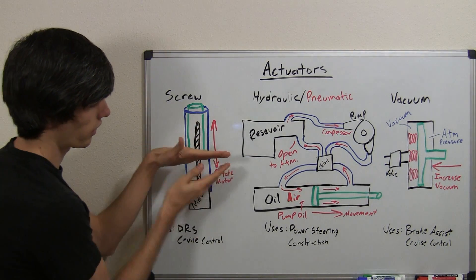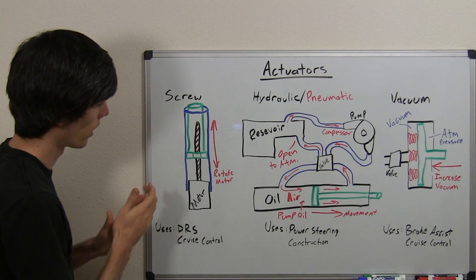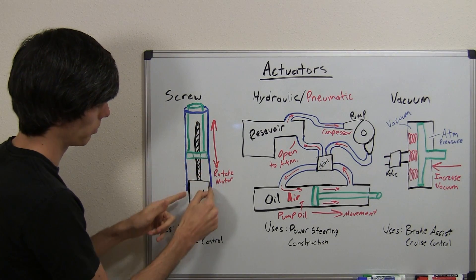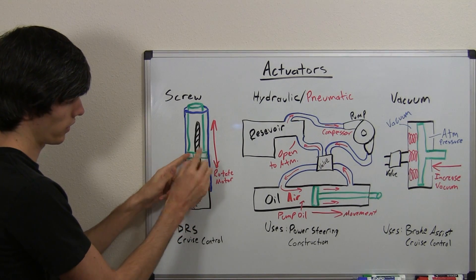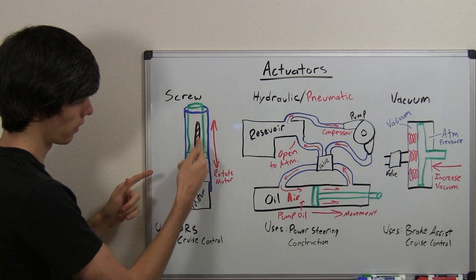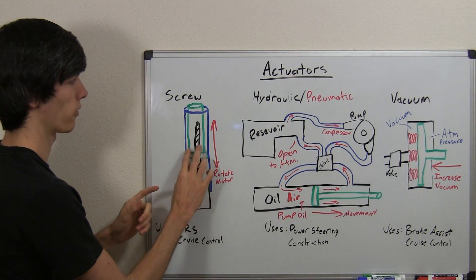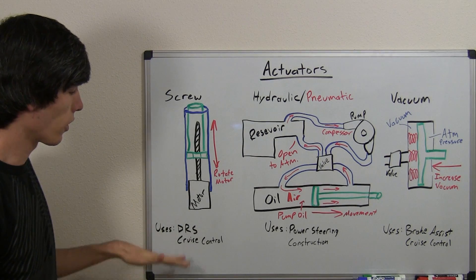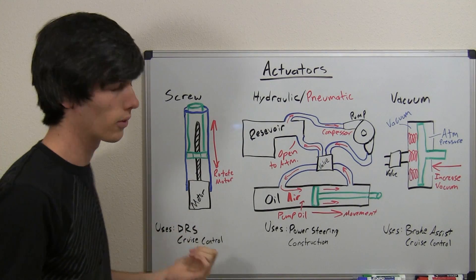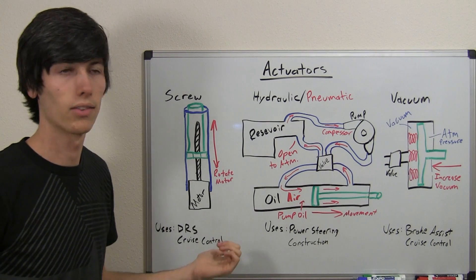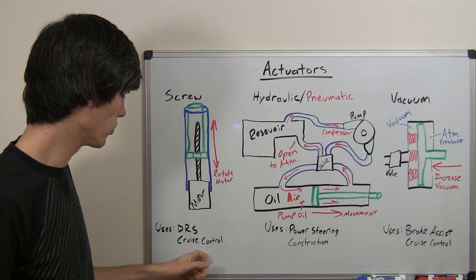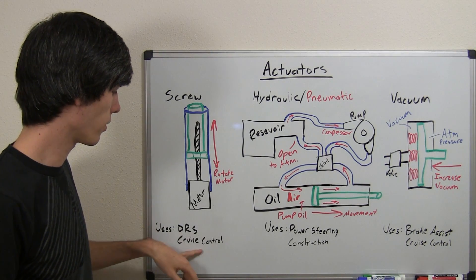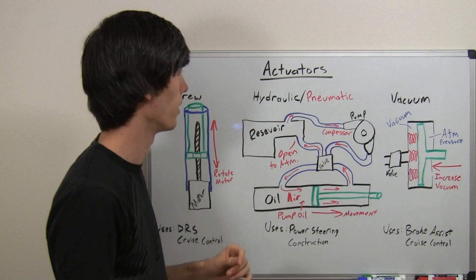If you have this oriented to the side, you can obviously move left or right rather than up or down. The reason why it goes up or down is because there's this blue guard here that prevents the nut from rotating with the threaded rod. So when the motor rotates, it's forced to go up or down, or left or right, however you have it set up. Some automotive uses include the drag reduction system used in Formula One, and also cruise control — I'll have a video on that later.